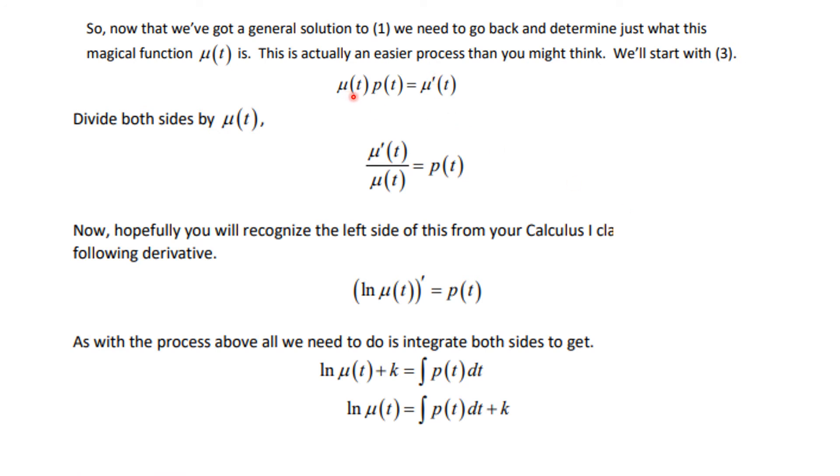Okay, so now, remember that we insisted that mu of t times p of t is equal to mu prime of t. That means that mu prime of t divided by mu of t is p of t, so we can integrate both sides, and we get that the ln of mu of t plus k is equal to the integral of p of t dt. You want to write some of this down so that you're actually following it, and then we're going to move the constant to the other side, and we're going to exponentiate both sides like we've done many times in this course.